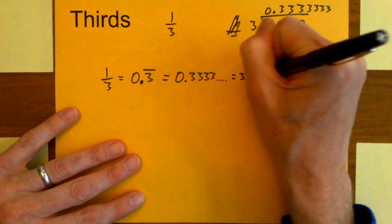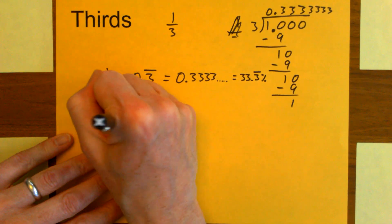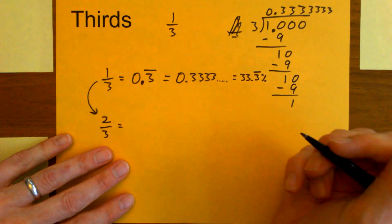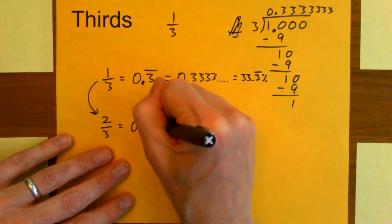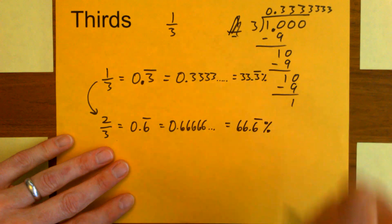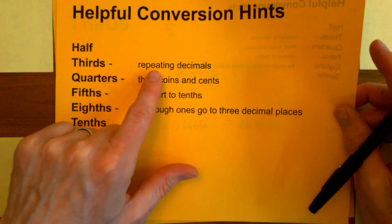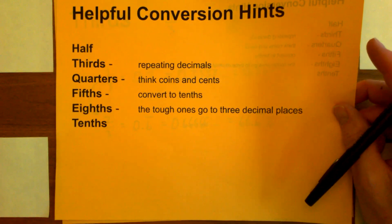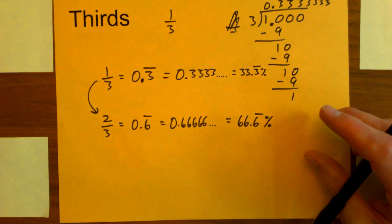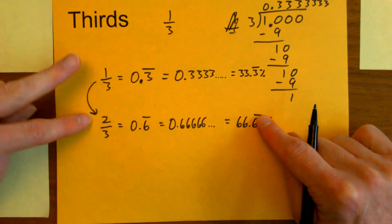As a percentage, that's thirty-three point three repeating percent. If I double it — from one-third to two-thirds — I just double my decimal: 0.3 repeating doubled goes to 0.6 repeating, or sixty-six point six repeating percent. Tip for thirds: if you see thirds, think repeating decimals. Out of these fractions, thirds are the only ones that will repeat. So if you see point three repeating, think one-third. If you see sixty-six point six repeating percent, that tells you it's either one-third or two-thirds.